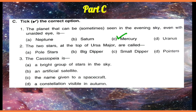The two stars at the top of Ursa Major — the two stars at the top of Ursa Major — what do we call them? Pointers. Cassiopeia is a bright group of stars in the sky — it is a constellation visible in autumn.